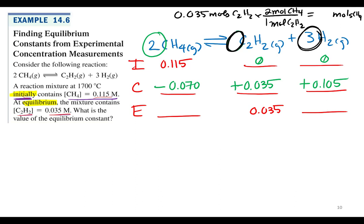Now a little bit more math. What do we get if we take 0.115 minus 0.070? 0.045. And then zero plus 0.105? 0.105. That's ice table in action.